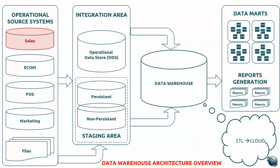That's one channel. Another channel is you may have a retail store in any city or country, and transactions come from a point of sale — people go directly to your store and make purchases. Another mode of transaction is through sales or marketing, where agents go directly to vendors or consumers and sell your products. There is also another channel from third-party external files. So your operational source systems include sales, e-commerce, point of sales, marketing, and flat files.